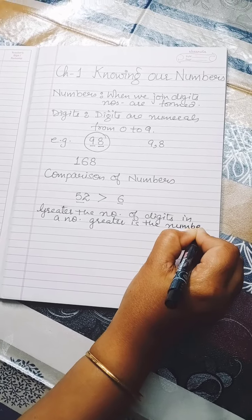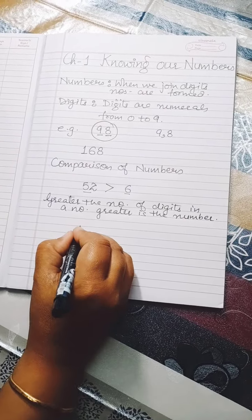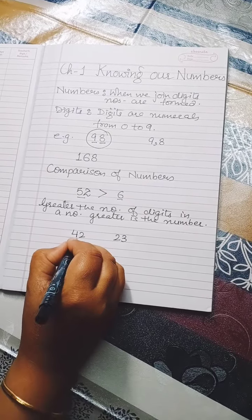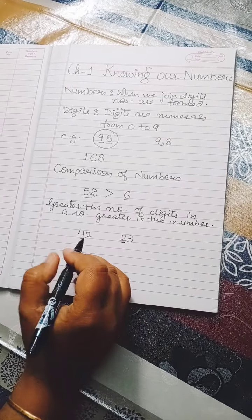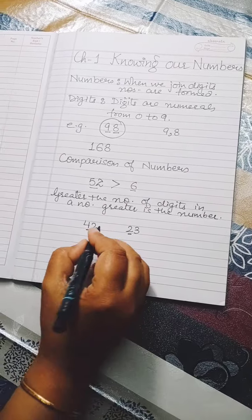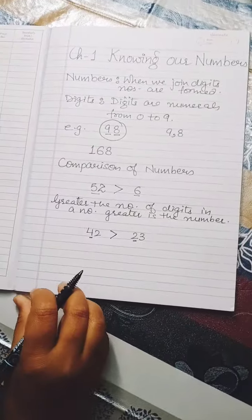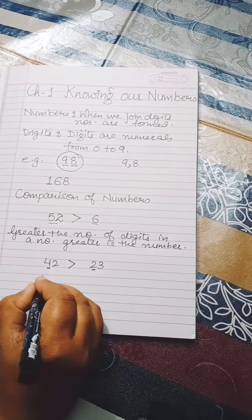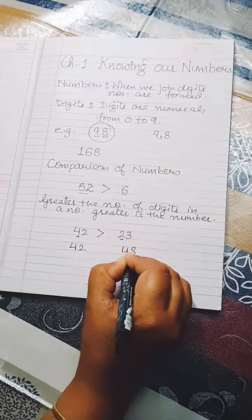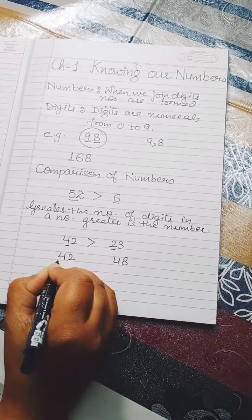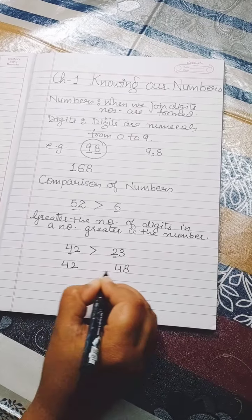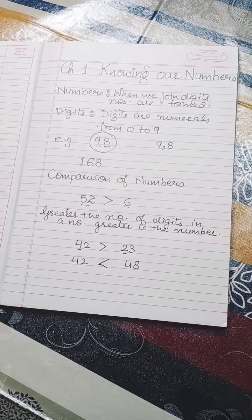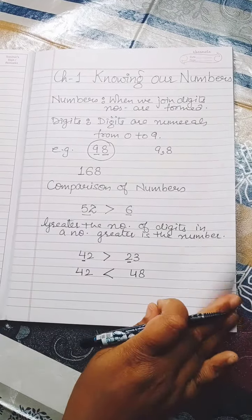If the number of digits in two numbers is the same, like 42 and 23, then we compare the greatest place value first. The first digit 4 is bigger than 2, so 42 is bigger than 23. If the first digit is the same, like 42 and 48, we move to the second place: 8 is bigger than 2, so 48 is bigger than 42.